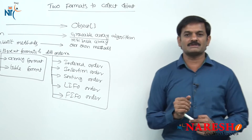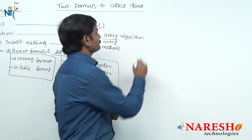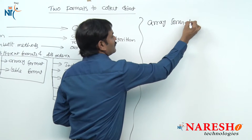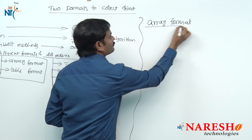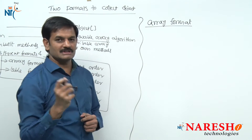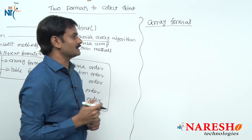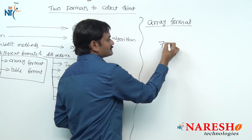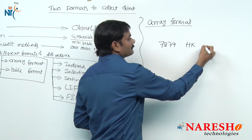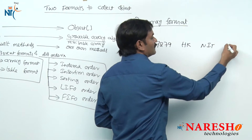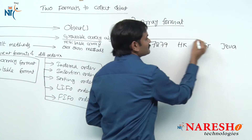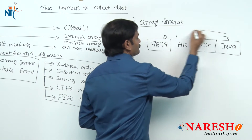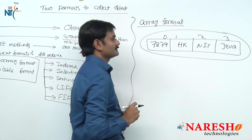Let me explain with small diagrams. Array format means storing objects in an indexed format. For example, I want to store employee data: 7279, HK, Hari, Nareshi Technologies, Java — stored at indices 0, 1, 2, 3. This is array format, a simple indexed format.